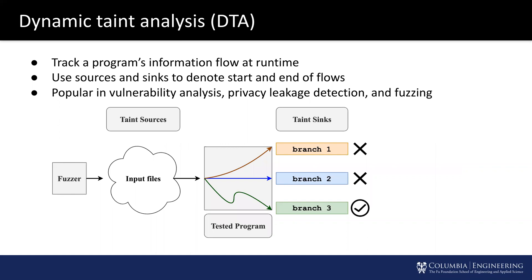Dynamic taint analysis is a popular technique to track a program's information flow at runtime. It defines the start of a flow as a taint source, the end of the flow as a taint sink, then tracks information flow from source to sink. Security researchers often use dynamic taint analysis to analyze vulnerabilities, detect privacy leakage, or guide fuzzing.